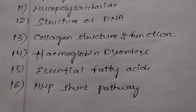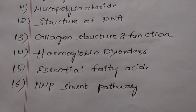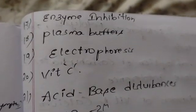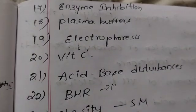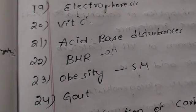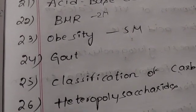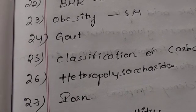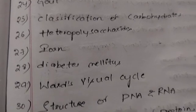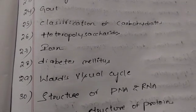You have to prepare well for the exam. Enzyme inhibition. Electrophoresis - most important one. Vitamin C. Acid-base disturbances and acid-base balance. BMR. Basal metabolic rate. Obesity and gout. Classification of carbohydrates. Heteropolysaccharides. Diabetes mellitus. Visual cycle - the most important question.